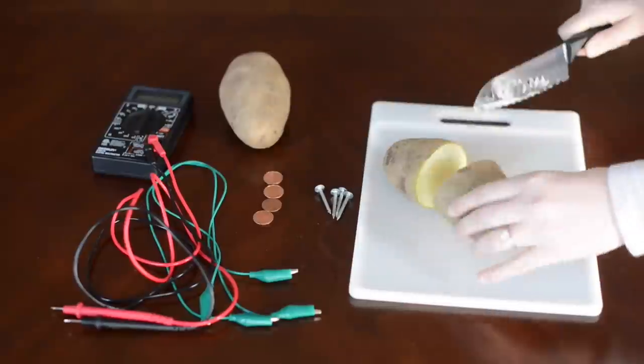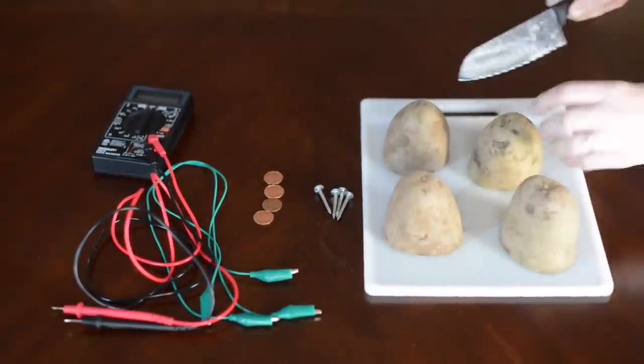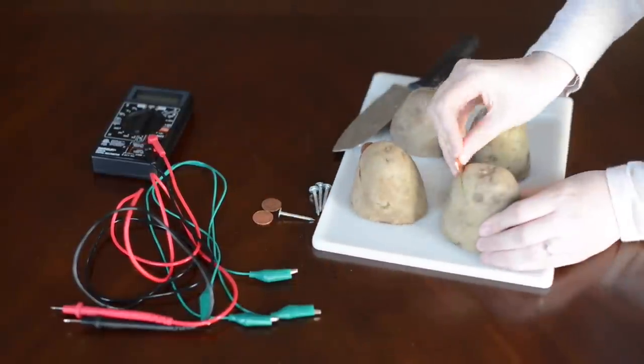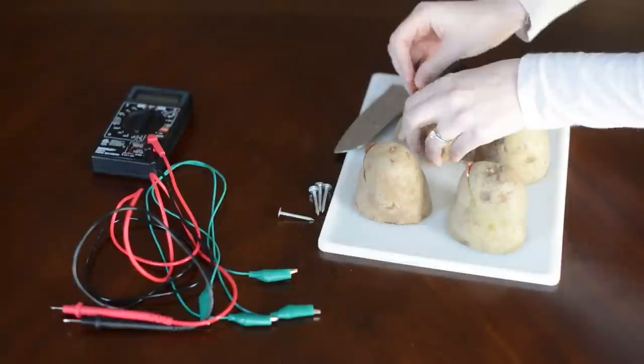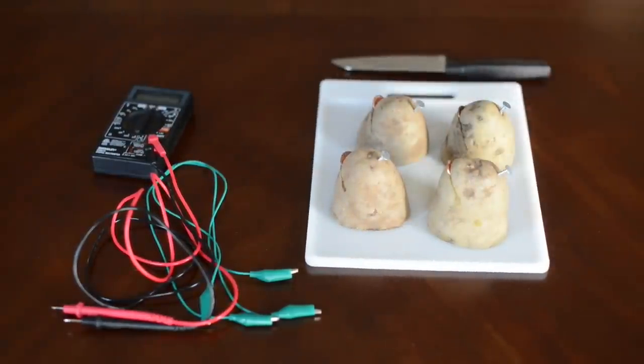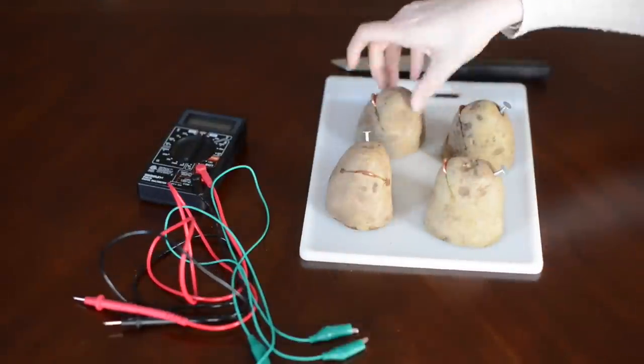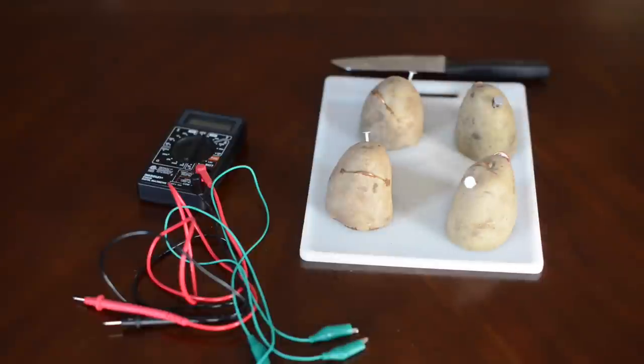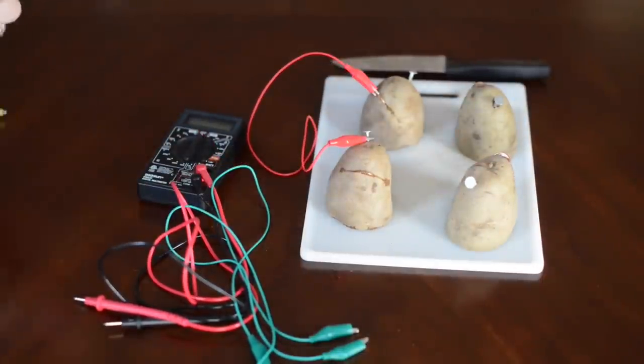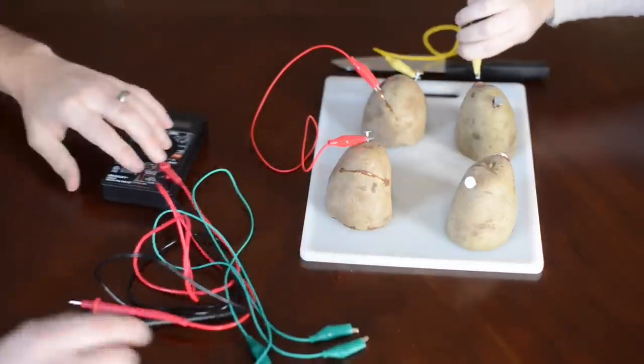And then what you're going to do is you're going to cut your potato in half and then cut slits on one end. And that's where your penny will go. Stick your penny in those slits and then stick your nail on the other side. And then you're just going to hook it up to your test leads. So you're going to hook one part of your test lead to the nail and then the other part to the penny and go around to create a circuit.